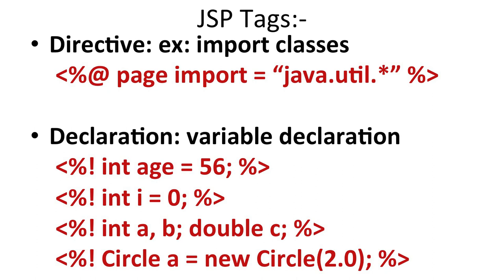The first JSP Tag is the import class tag, started by <%@ (percent at-the-rate). When we write the at-the-rate sign, it means we are importing some library. For example, <%@ page import="java.util.*" %> imports the utility package. If we are doing database connectivity, we write <%@ page import="java.sql.*" %>. This is the page import directive.